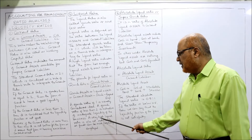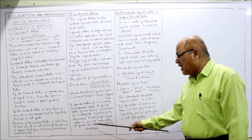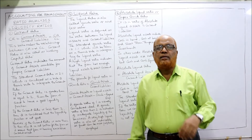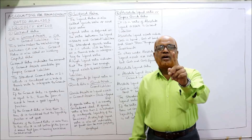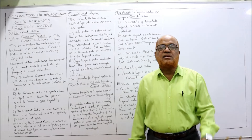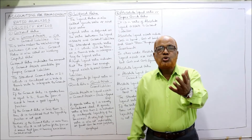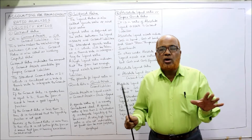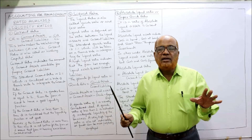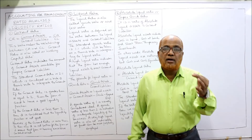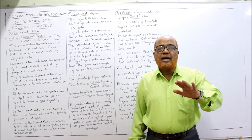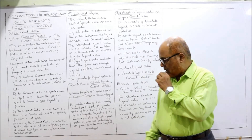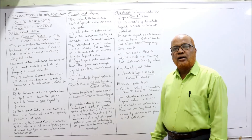A very high liquid ratio is also not advisable, as funds can be more profitably employed elsewhere. For example, a liquid ratio of 5:1 means for every 1 rupee of current liability there are 5 units of liquid assets — this shows unnecessary idle cash being held. Idle money generates no income but incurs cost, so cash should only be kept to the extent required.